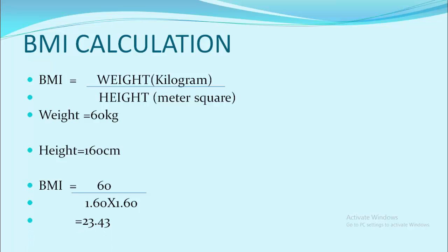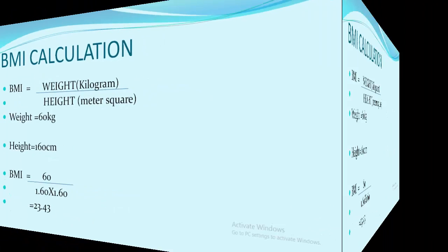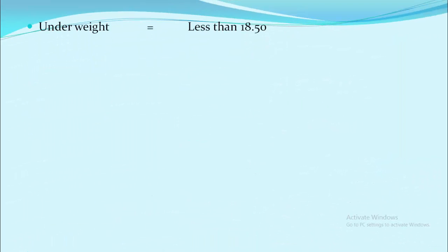What does 23.43 indicate? This value may indicate whether you are obese or not obese. For example, there are different ranges to measure your body healthiness. If the value is less than 18.5, it is underweight. If the normal range is 18.5 to 24.99, if you are overweight, you may be more than or equal to 25.